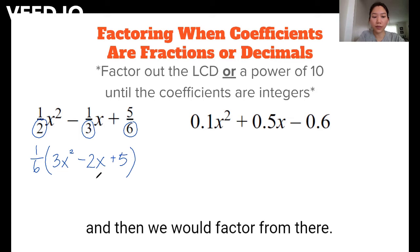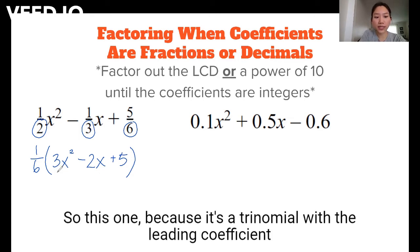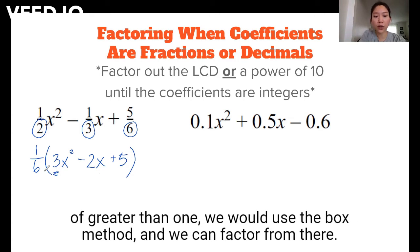And then we would factor from there. So this one, because it's a trinomial with a leading coefficient greater than one, we would use the box method and factor from there.